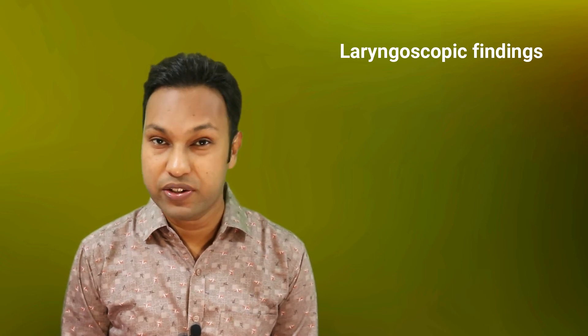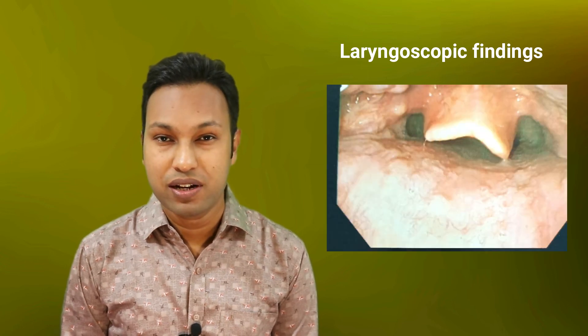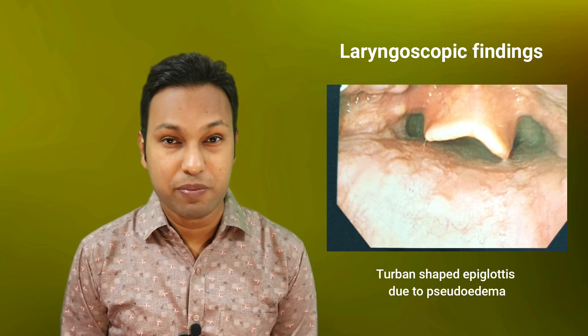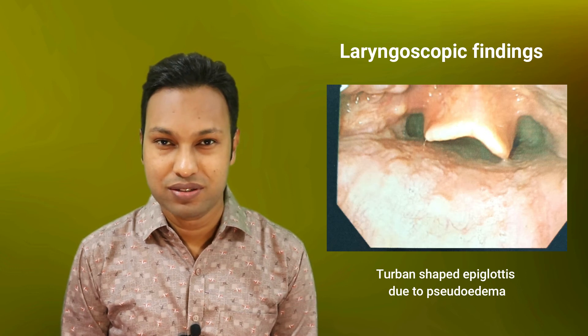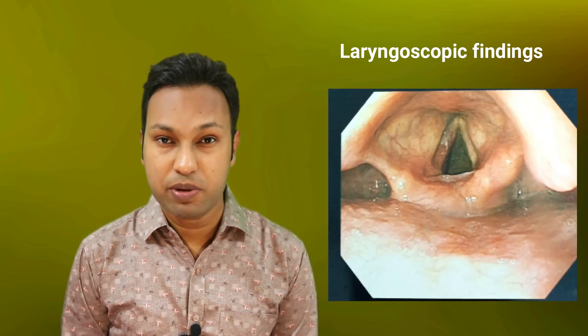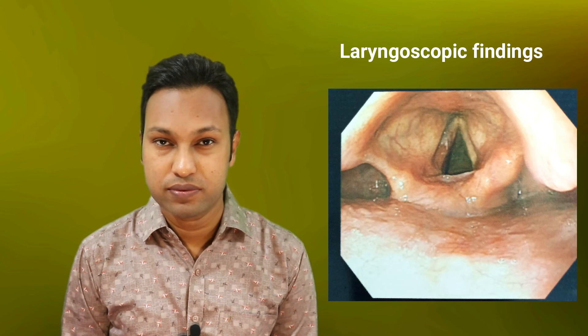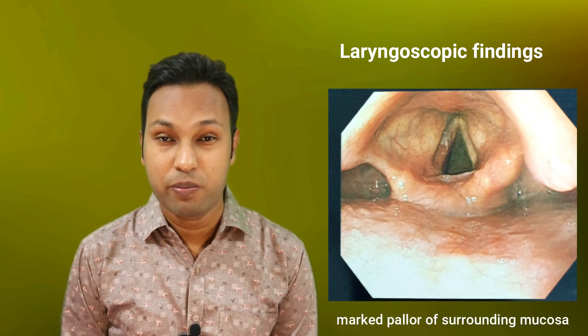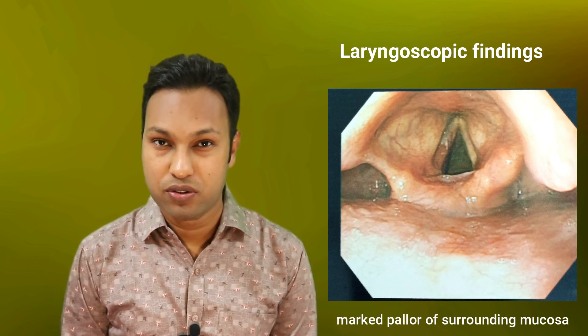Granulation tissue may be seen in the interarytenoid region or on the vocal process of the arytenoid. There may be pseudo edema of the epiglottis, which is called turban epiglottis. The ventricular bands and aryepiglottic folds may be swollen, and the surrounding mucosa may show marked pallor.